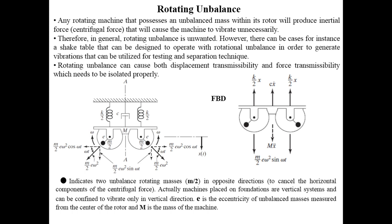We're going to carry out a similar analysis as we have been doing in the previous lectures. In the situation shown here, we have two rotors rotating in opposite directions, with some springs and dampers attached to the machine that has a mass of capital M. This machine contains rotors rotating in opposite directions, each with a small unbalanced mass.